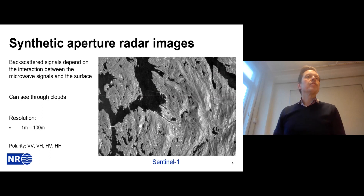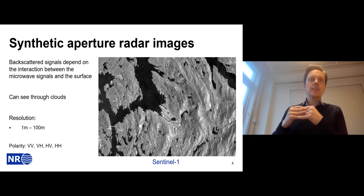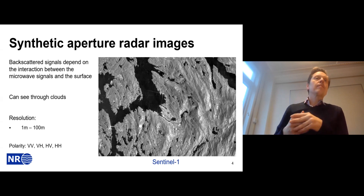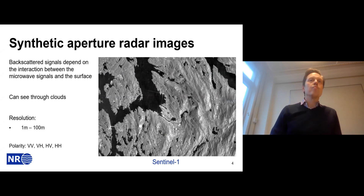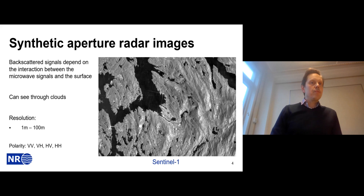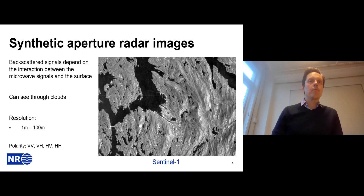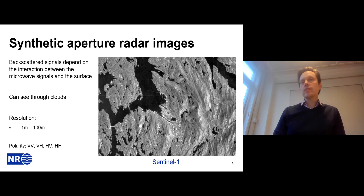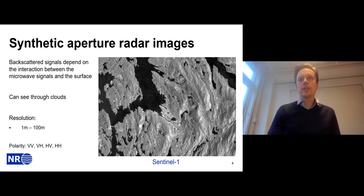Another important sensor is synthetic aperture radar, or SAR. These images are created by sending a radar signal from a satellite or plane down to earth and receiving the backscattered energy. The backscatter depends on the interaction between the microwave signals transmitted and the surface. The key benefit of SAR sensors is that you can see through clouds, which is particularly useful for satellite data. Resolution typically ranges from 1 to 100 meters, and images often come with at least two polarizations.